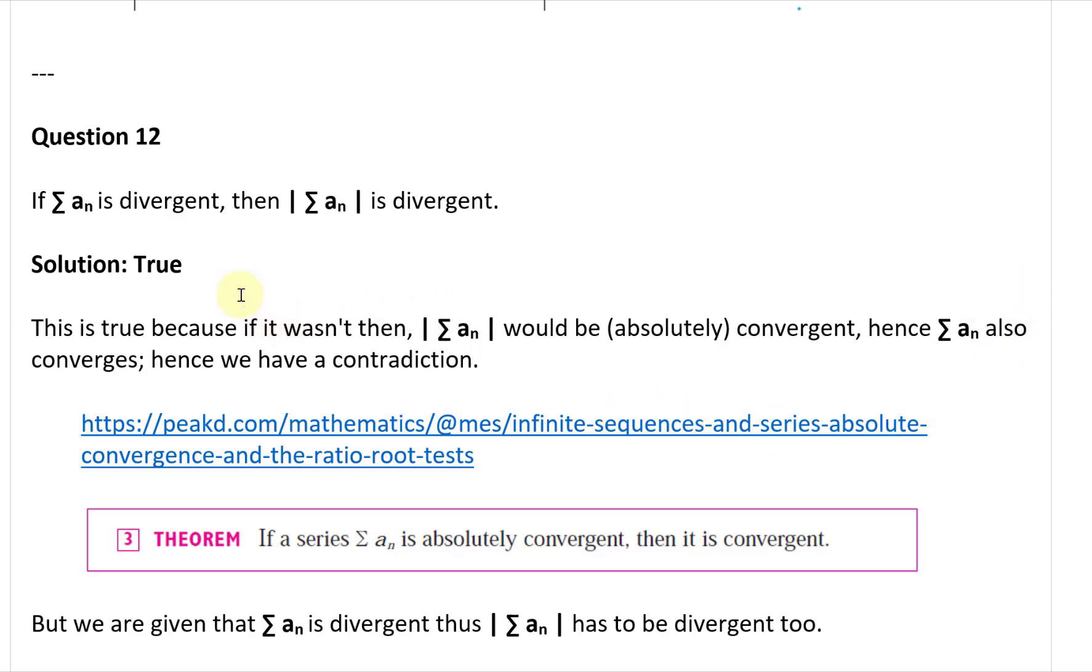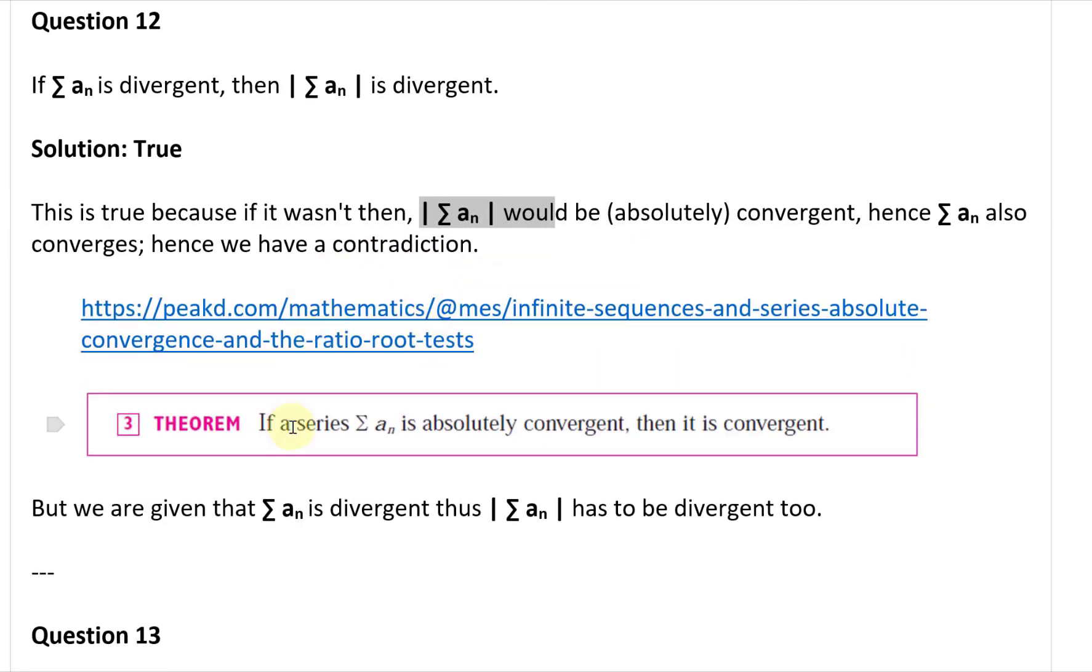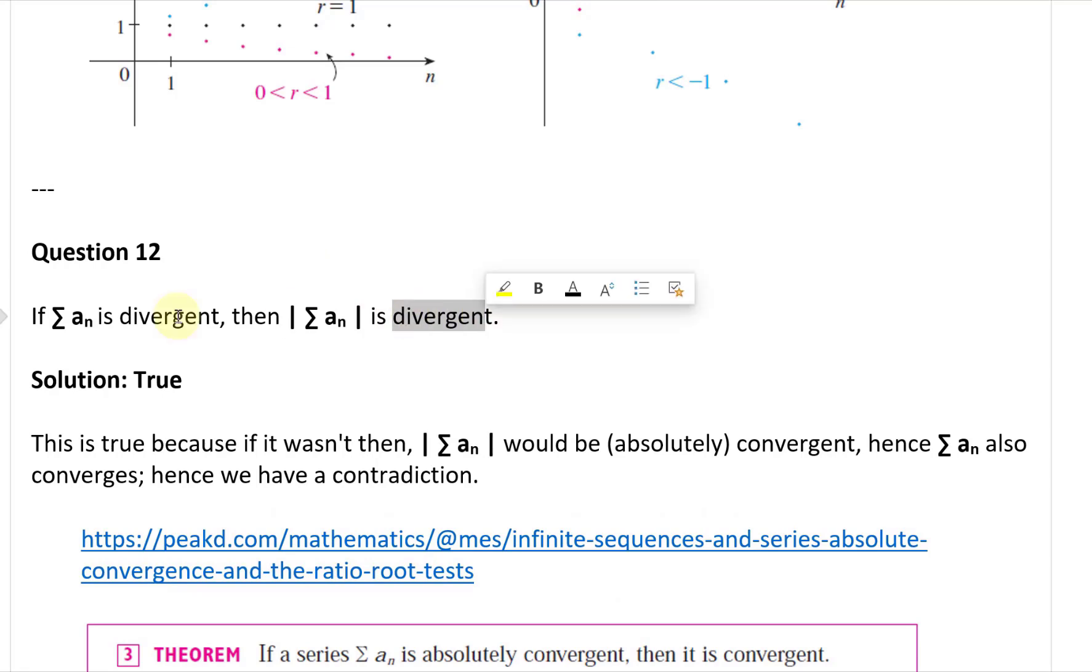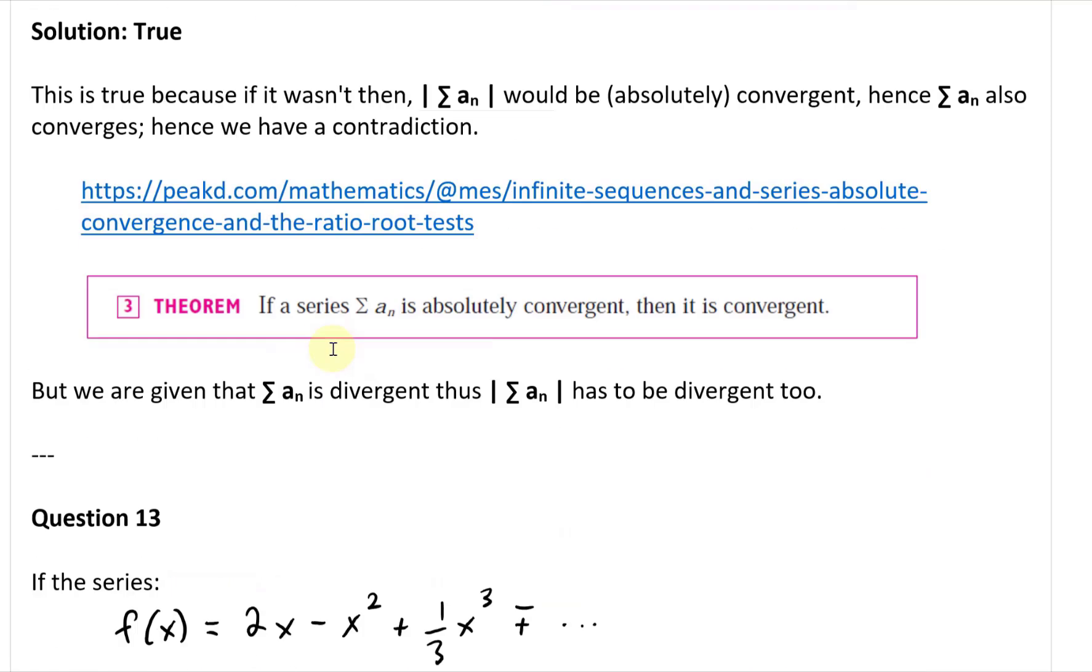Because if it wasn't true, so if this is divergent, then this isn't divergent, this becomes convergent. But then this is absolutely convergent, so then the regular one's going to be convergent, so that doesn't make any sense. So recall from my little video, if a series aₙ is absolutely convergent, then it is convergent. So you can't have this convergent and this divergent. In other words, if this is divergent, this also has to be divergent.